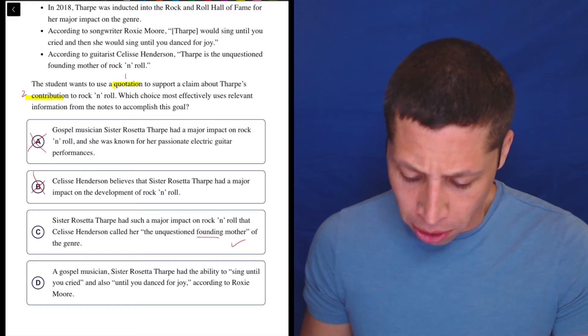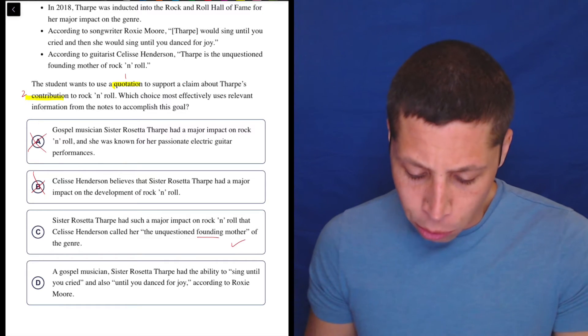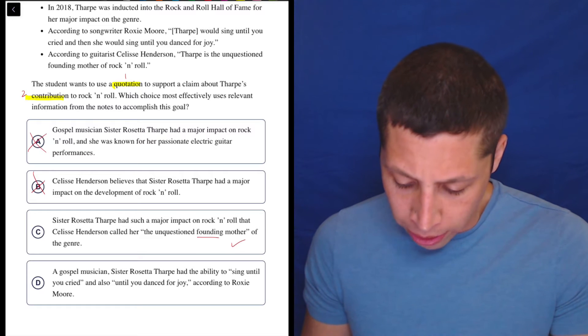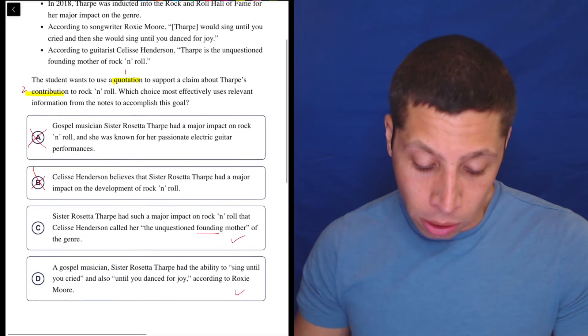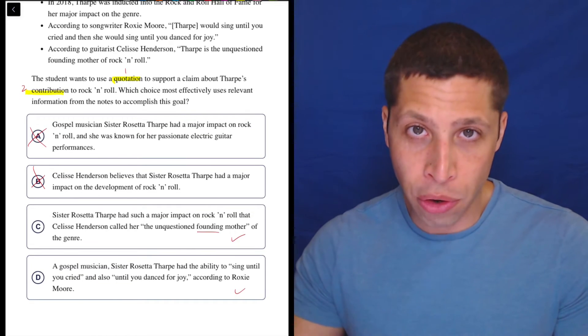Let's look at D. A gospel musician Sister Rosetta Tharp had the ability to 'sing until you cried and also until you dance for joy,' according to Roxy Moore. So we definitely have a quote, but now we have to think about the other goal here: what is the contribution to rock and roll?